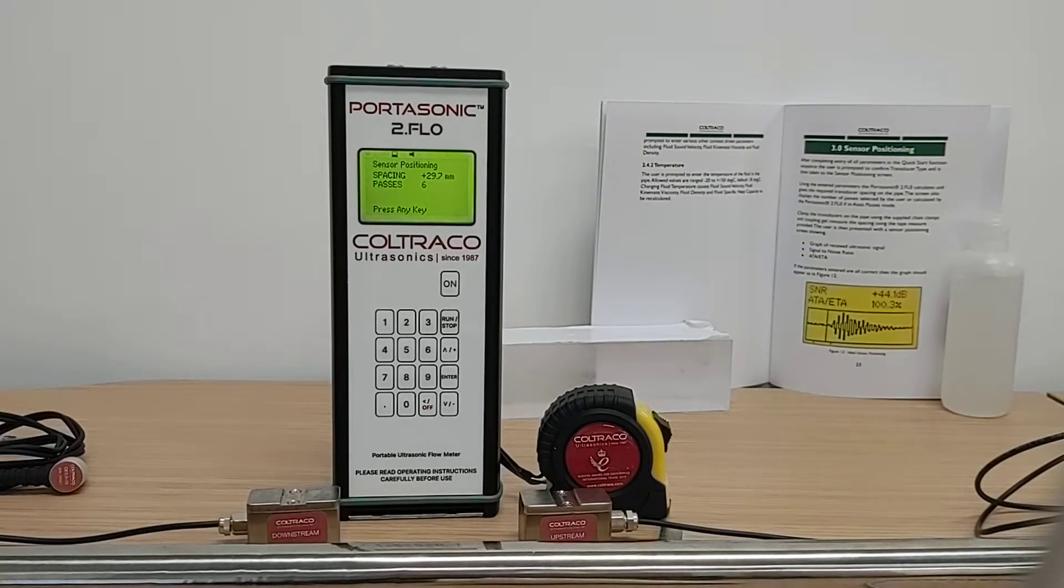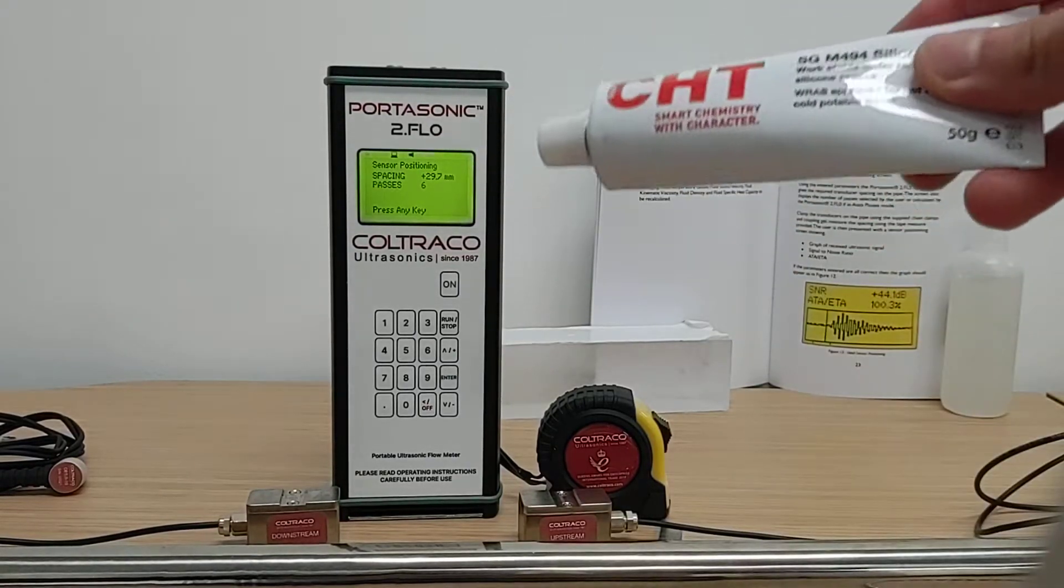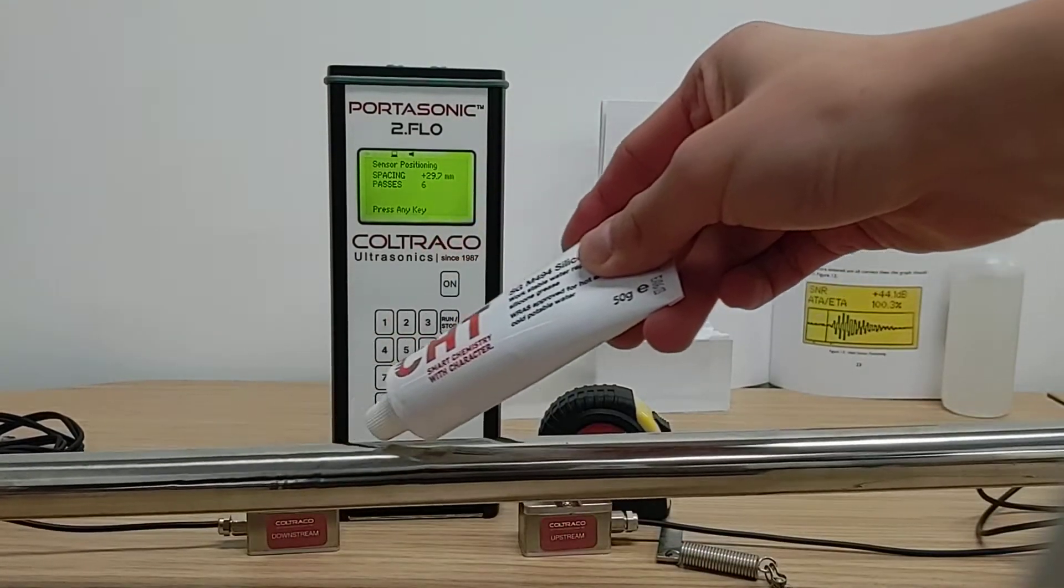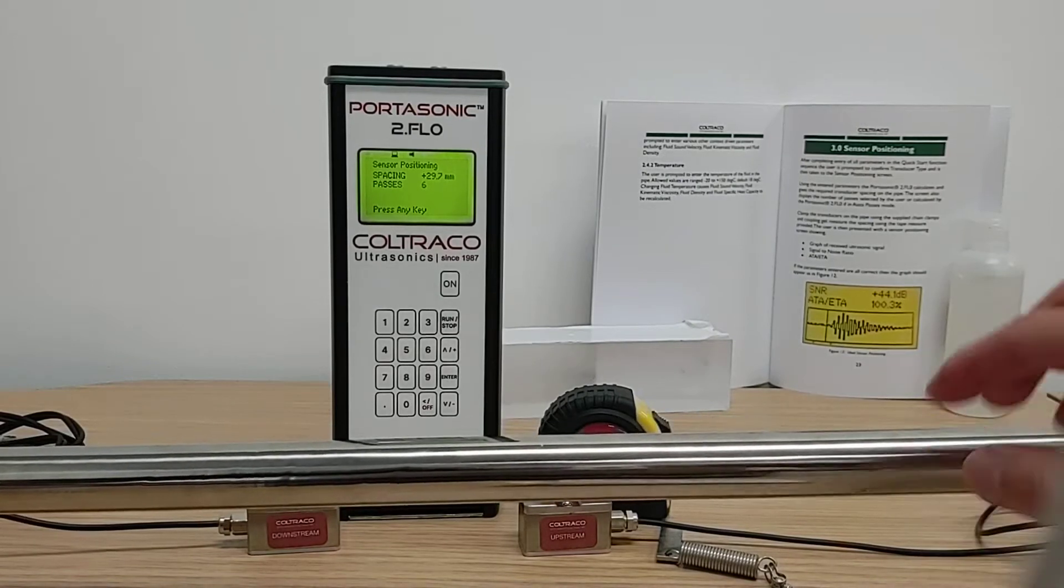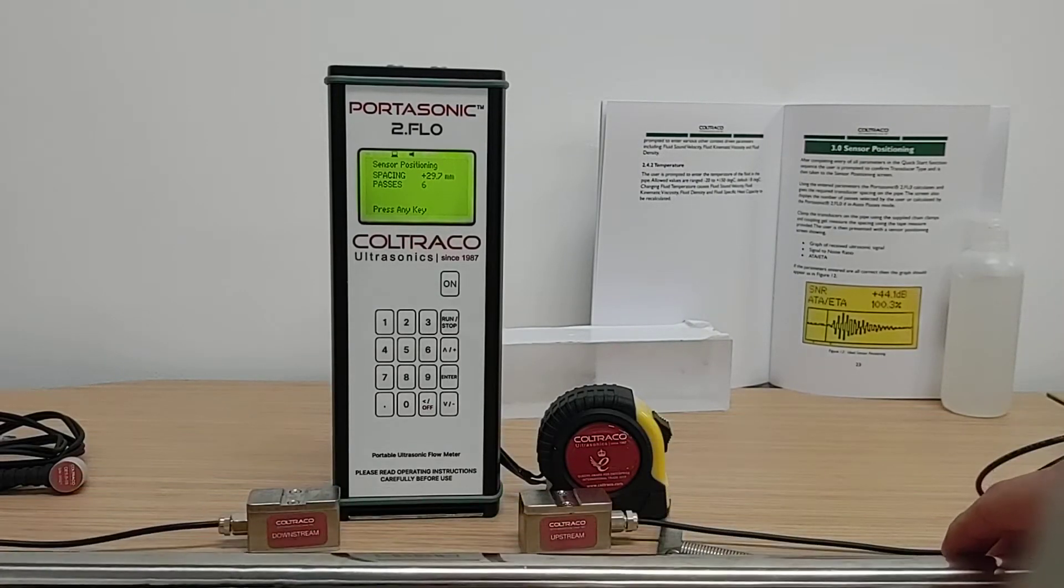To install the DM10 sensors on the pipe, first of all you have to apply some silicon grease on the pipe surface. When applying silicon grease on your pipe, you only need to use a small amount, just like how you would apply toothpaste.